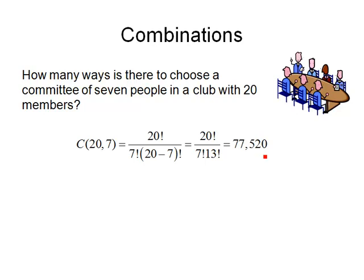An interesting question that comes up is you could think of this problem as choosing 7 people to be on the committee, but you could also think of it as choosing 13 people to not be on the committee. That would be essentially the same thing. Let's calculate how many ways there are to choose 13 people to not be on the committee.